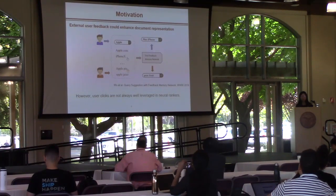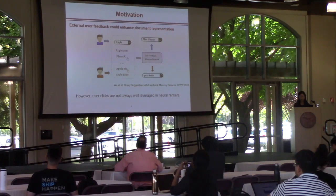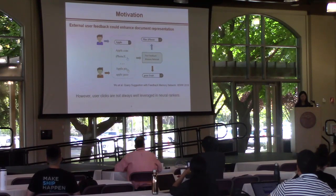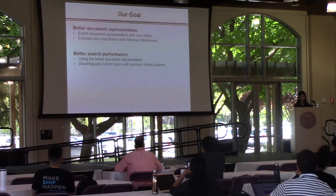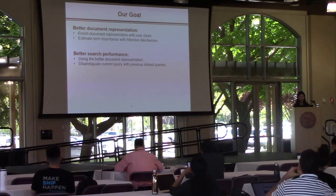Not only the relevance signals, external user feedback could enhance document representation, and effective document representation is very important for neural ranking models. However, user clicks are not always well-leveraged in neural rankers. Based on these two motivations, our goal is to achieve better document representation and improve search performance.